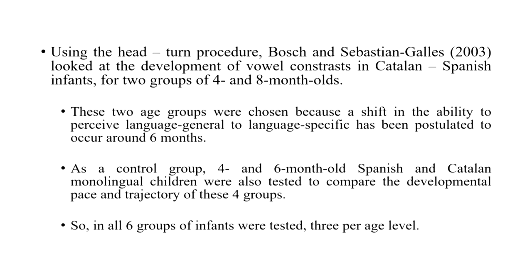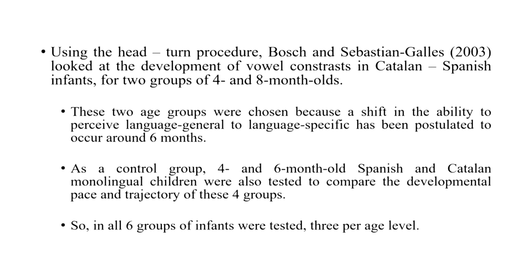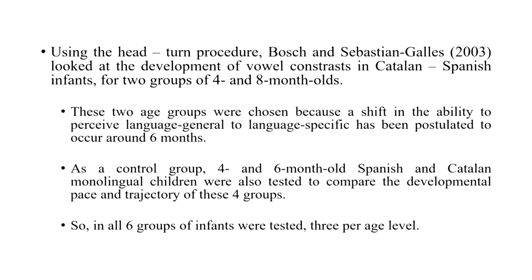Using the head turn procedure, Bosch and Sebastian-Gallés looked at the development of vowel contrasts in Catalan-Spanish infants for two groups of four and eight month olds. These are infants whose environment consists of both Catalan and Spanish input. The choice of age groups is interesting because prior to 6.5 months the ability is more language-general, so for four month old infants it is still language-general, and for eight month old infants it is gradually moving towards language-specific capabilities. As a control group, four and six month old Spanish and Catalan monolingual children were also tested to compare their developmental pace and trajectory.